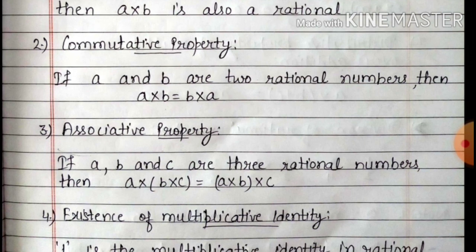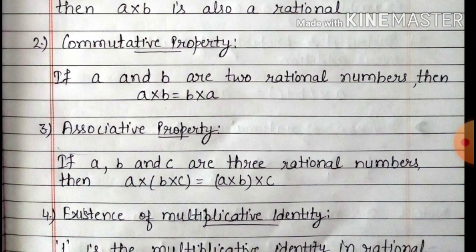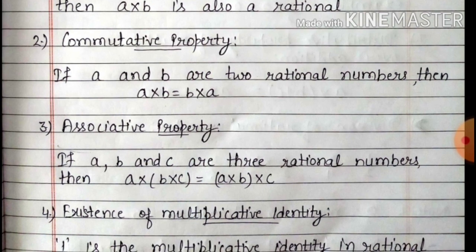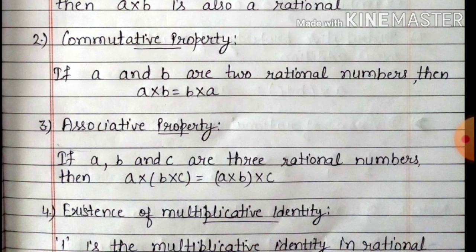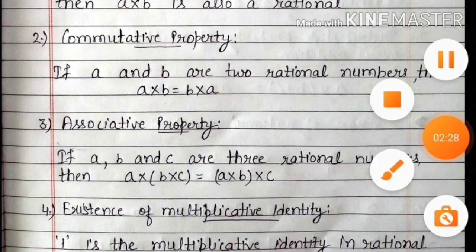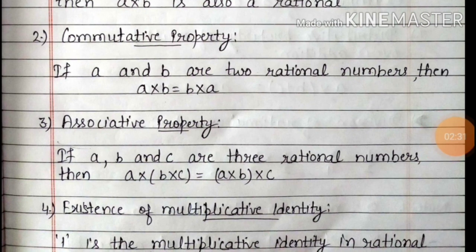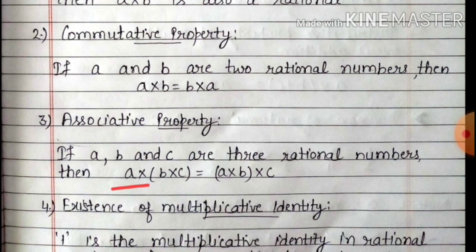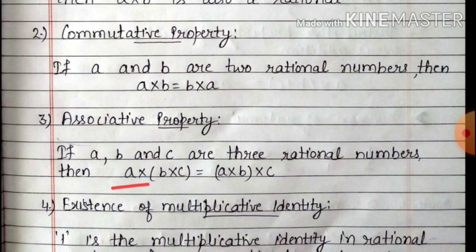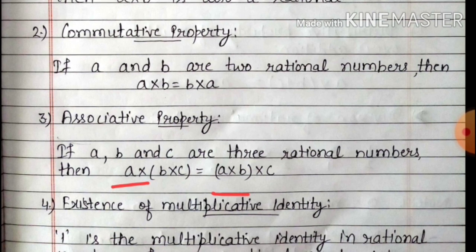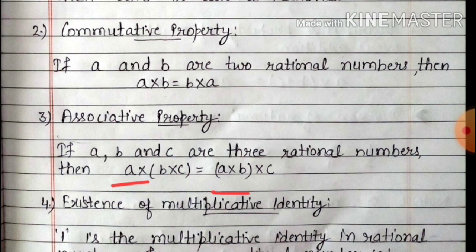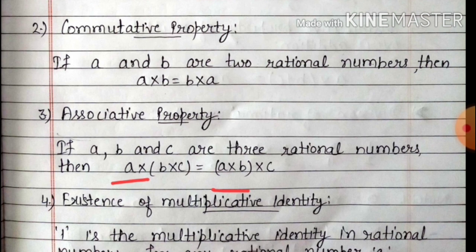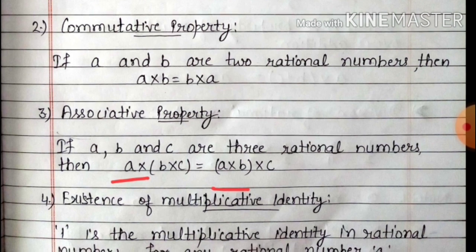Third is associative property. If A, B and C are three rational numbers, then A multiply (B multiply C) equals to (A multiply B) multiply C. यहाँ पर note करेंगे कि यहाँ पर हमने first rational number को bracket से बाहर रखा है, second और third को bracket के अंदर रखा है, और equal के right side में first और second को bracket में रखा है. तो associative property में three rational numbers का use हुआ है.